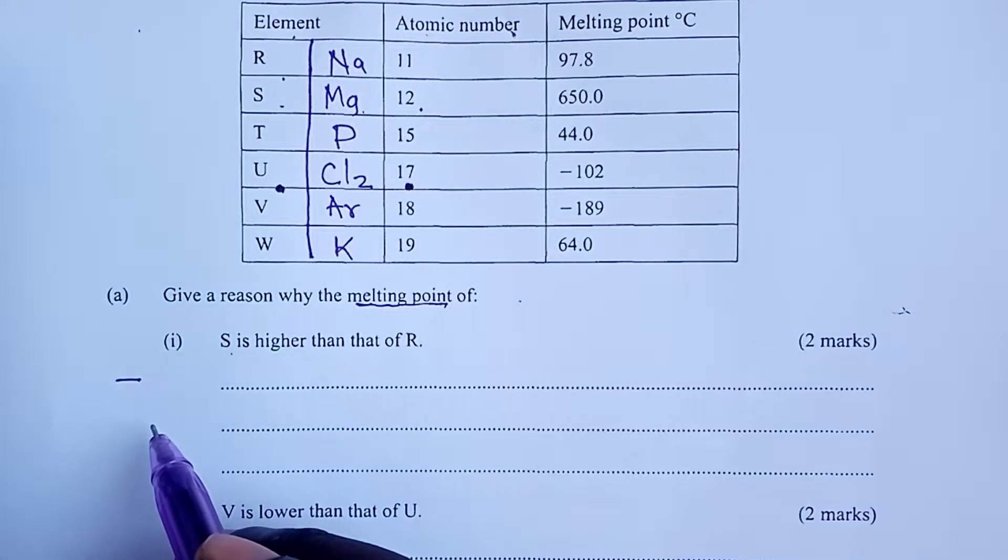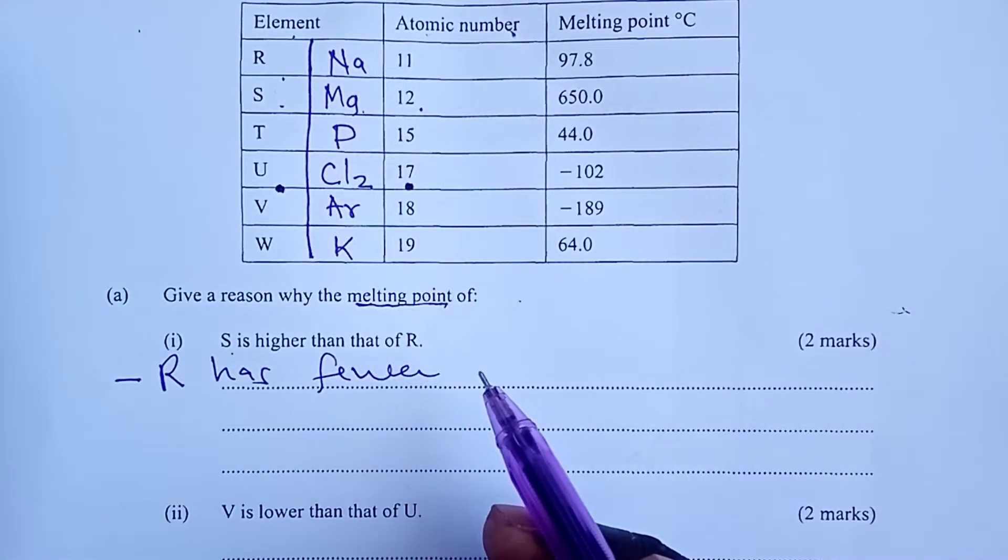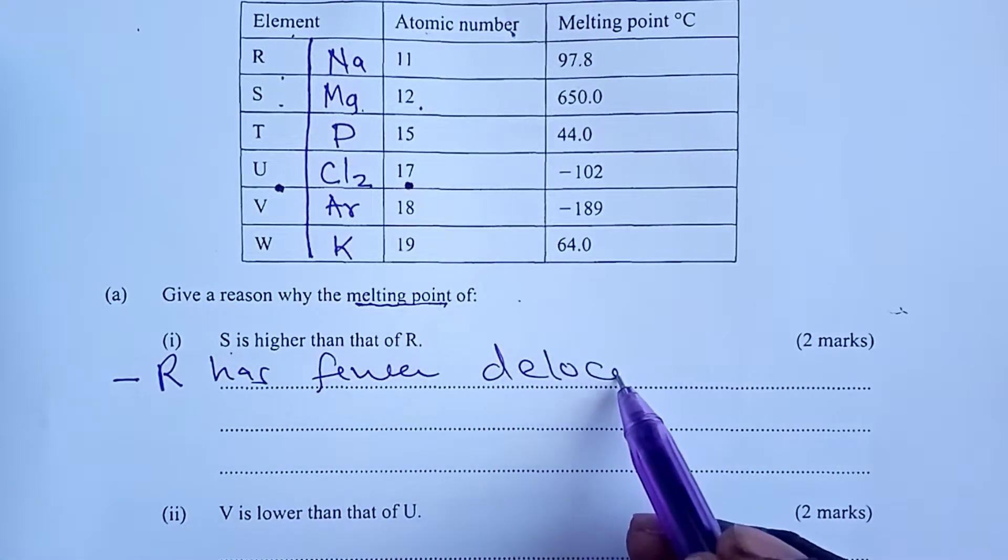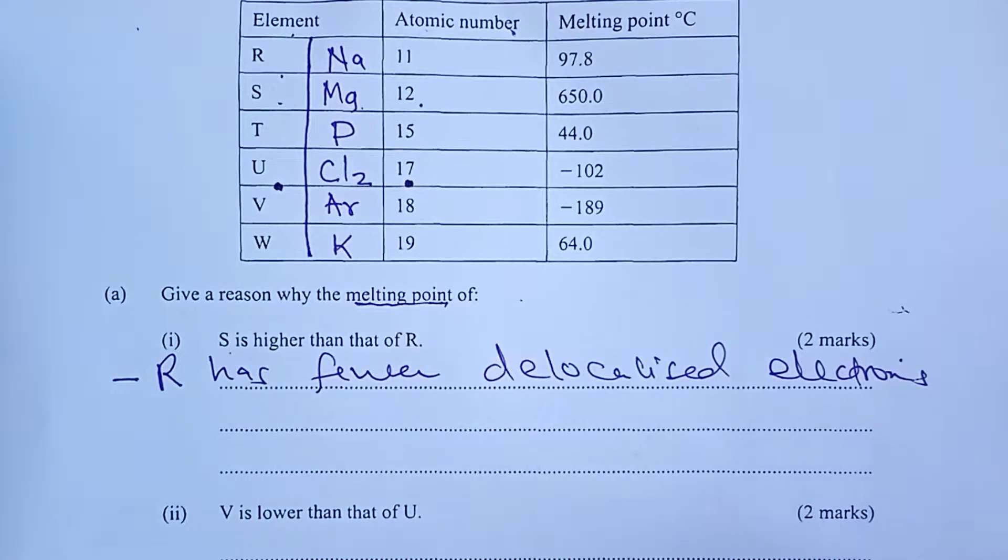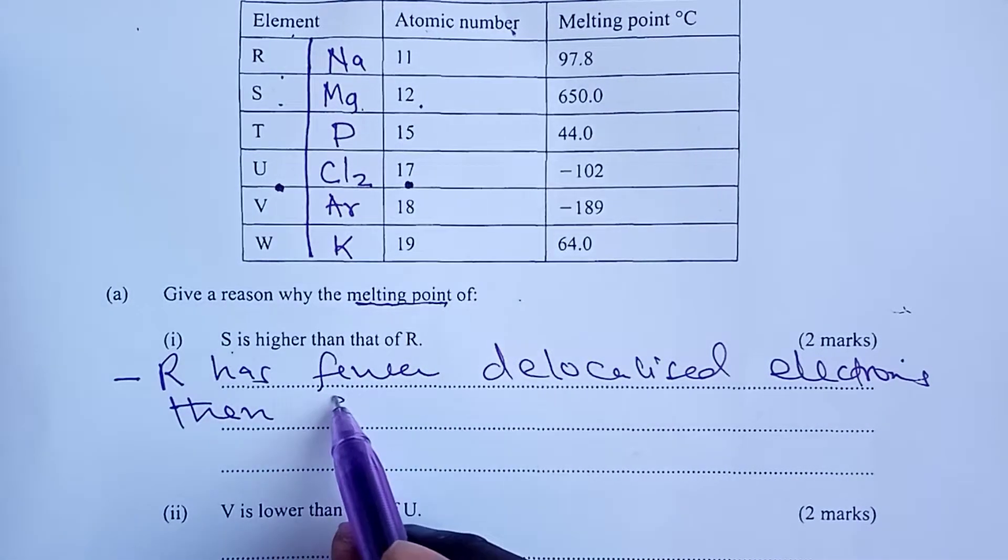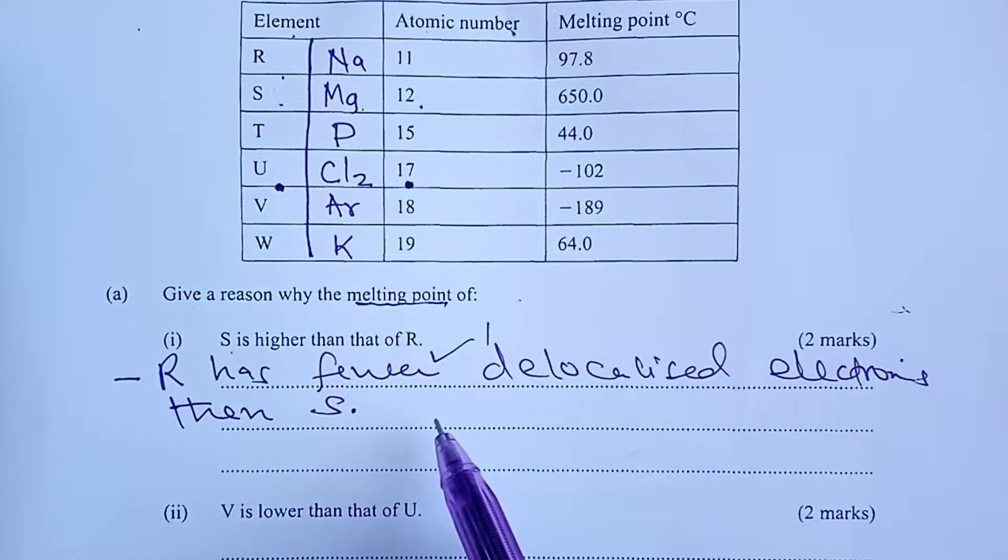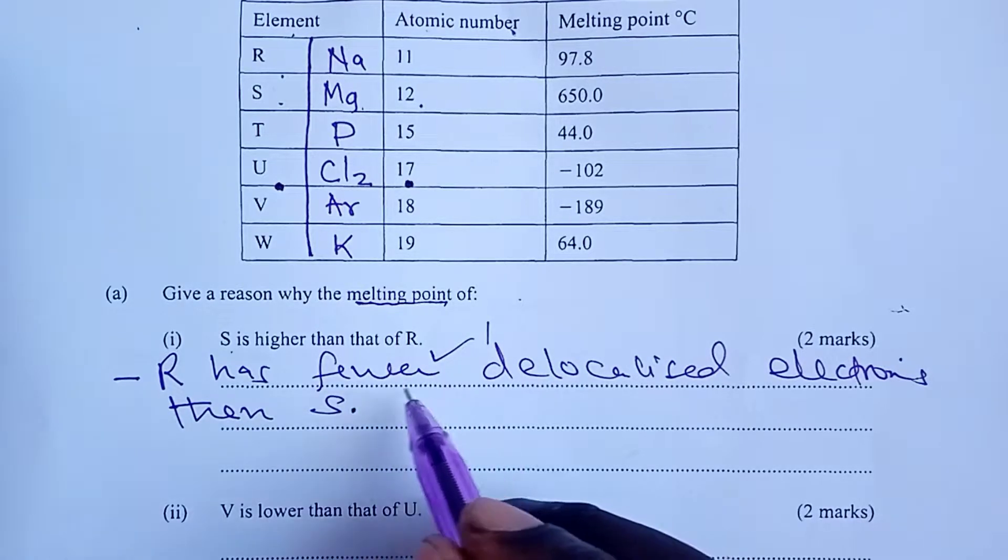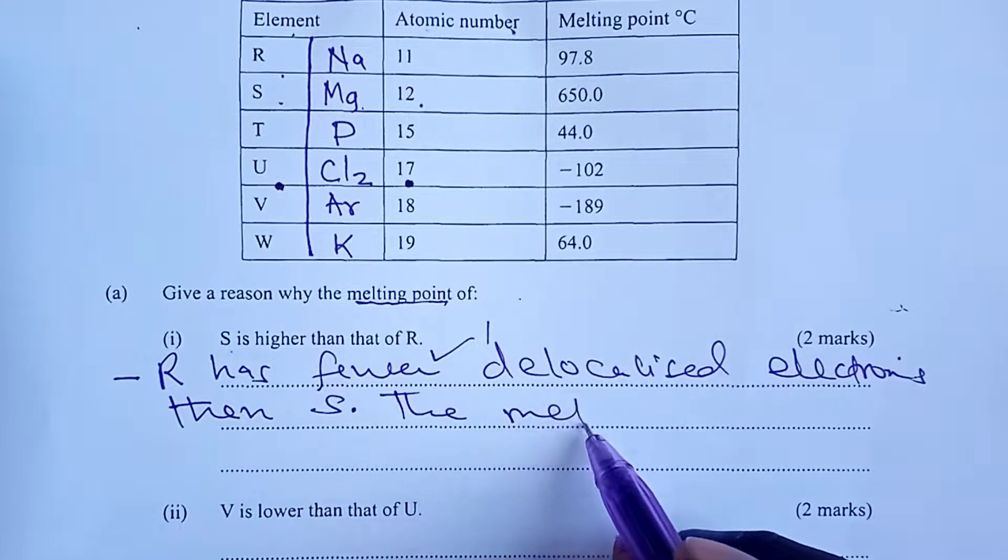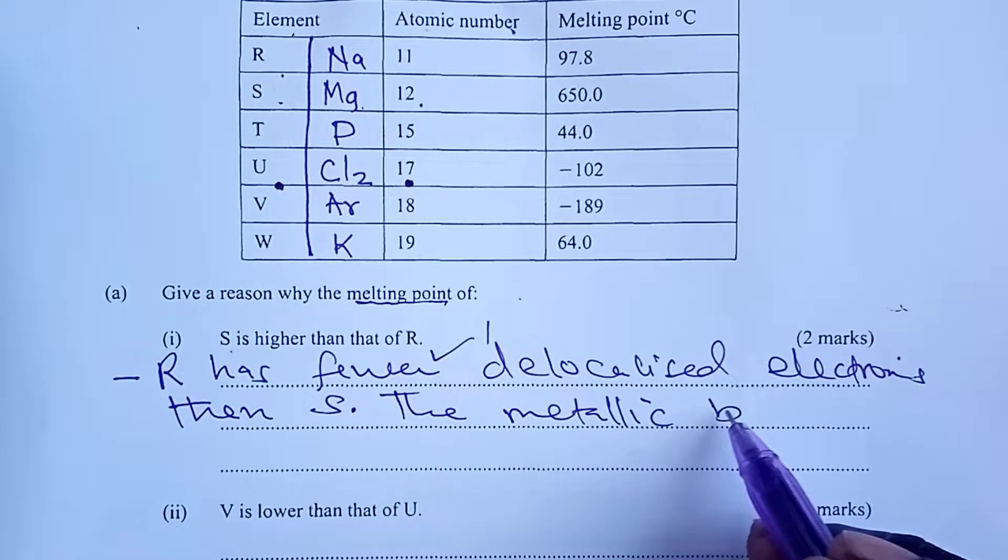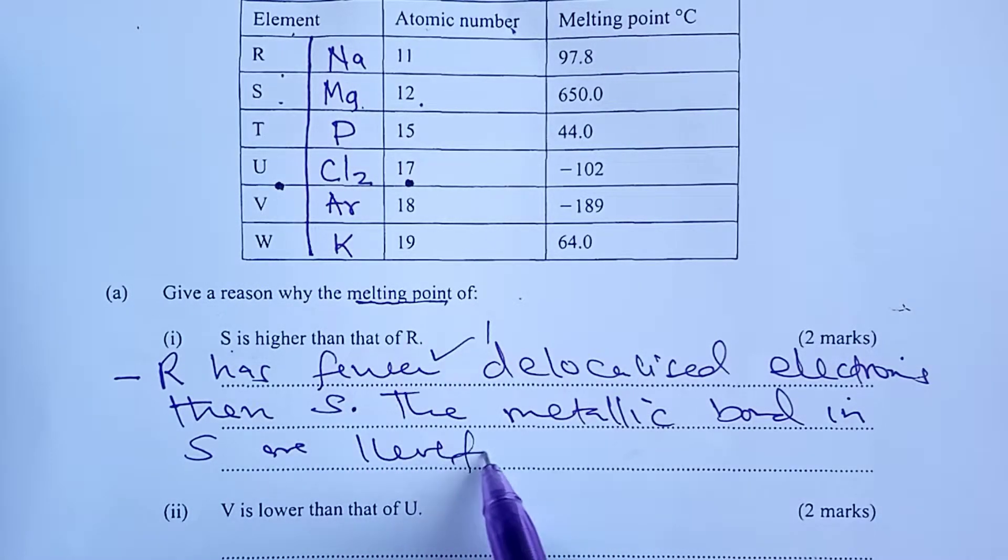The expected response to this question would have been that R has fewer delocalized electrons than S. This would give you the first mark, but then you don't end there. You say that because of the fewer delocalized electrons, the metallic bonds in S are therefore stronger.